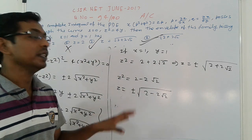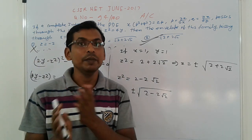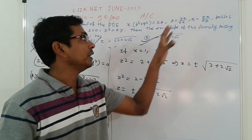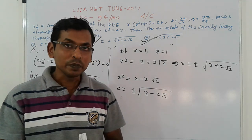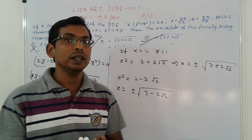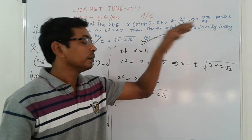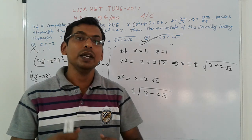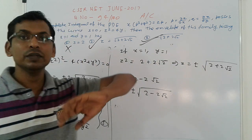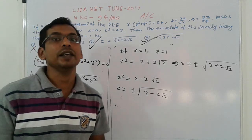This was a lengthy problem. In summary: first find the complete integral, then apply the given boundary conditions to find b, use discriminant properties to find a in terms of b, then again apply discriminant to find the envelope of the family of surfaces passing through the given curve. That gives the required answers. Thank you, take care, bye bye.